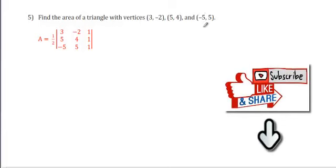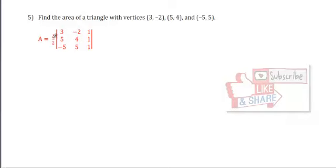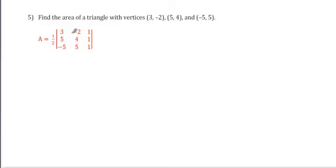There is a way which is using determinant to calculate the area of the triangle. To find the area, we can say it's equal to half the determinant of the numbers included in the vertices. Here the coordinates of the vertices 3, -2, 5, 4, and -5, 5. We put them in order so that we can put the last column as 1, 1, 1.